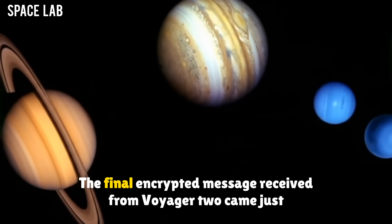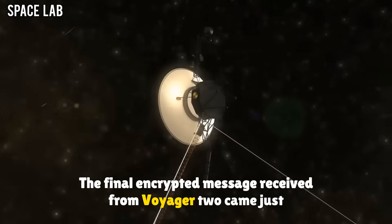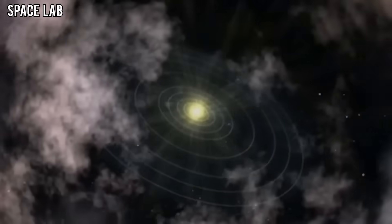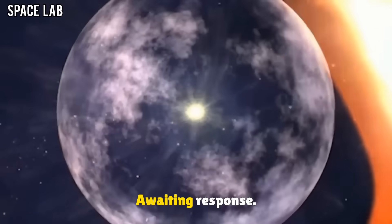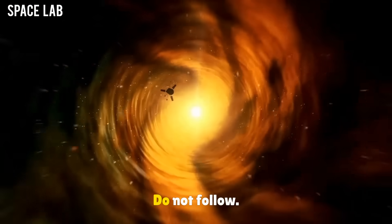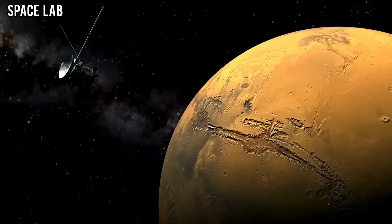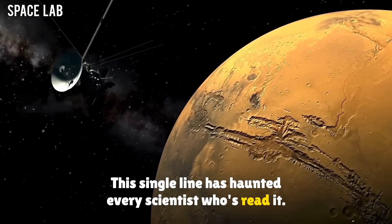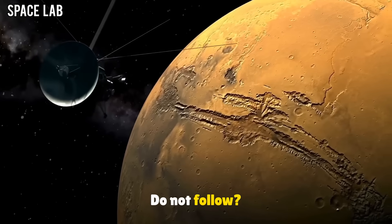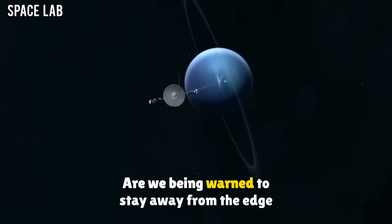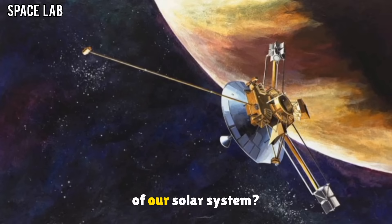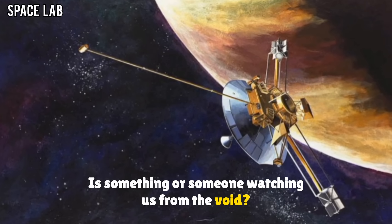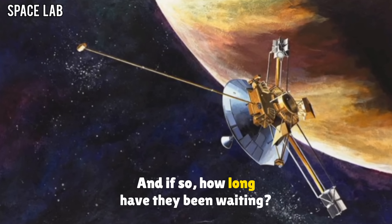The final encrypted message received from Voyager 2 came just before its relocation. Transmission complete. Awaiting response. Do not follow. This single line has haunted every scientist who's read it. Do not follow? Are we being warned to stay away from the edge of our solar system? Is something or someone watching us from the void? And if so, how long have they been waiting?